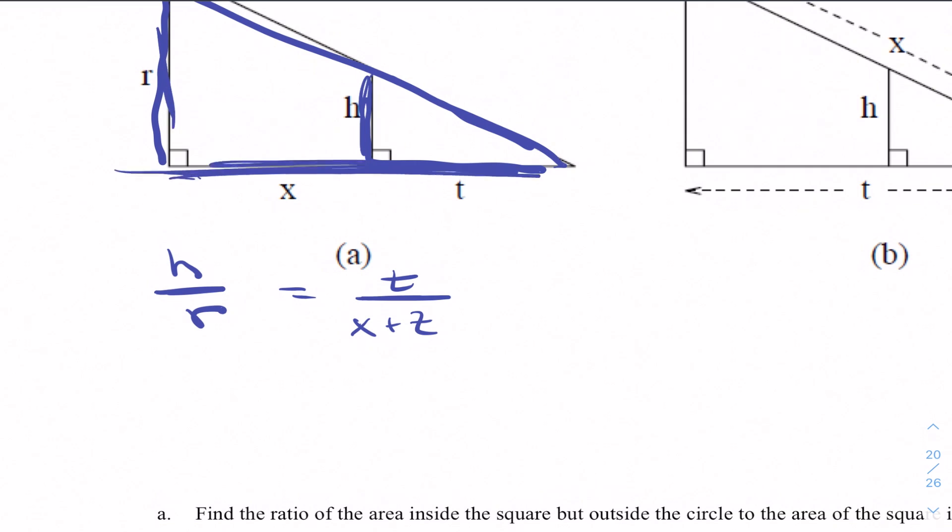Once we have that set up, we could just cross multiply, and we'd be left with x plus t times h equals rt, or x plus t equals rt over h, or x is equal to rt over h minus t.